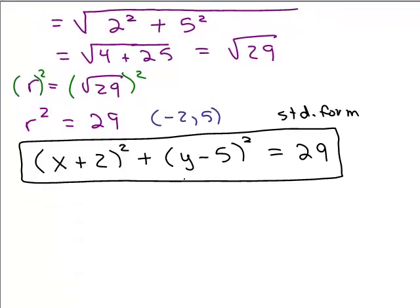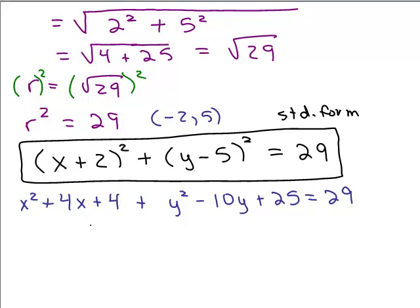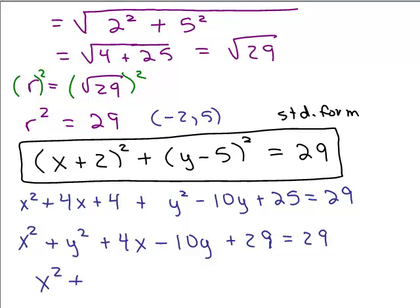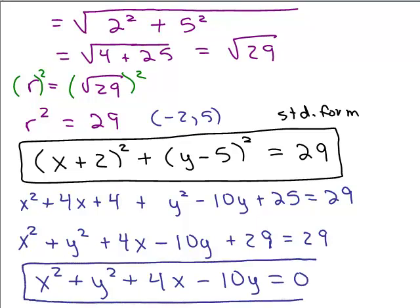To get the general form, we just multiply that all out. So, let's do that now. We've got to square X plus 2. That will be X squared plus 4X plus 4 plus Y squared minus 10Y plus 25 equals 29. So, I'm going to put my X squared term first, my Y squared term next, put my X term which is the plus 4X, put my Y term which is the negative 10Y. And notice I've got 4 plus 25, that's plus 29. And then, I'm going to have to subtract 29 from both sides. What happens when you subtract 29 from both sides? You get X squared plus Y squared plus 4X minus 10Y equals 0 and there is our general form.